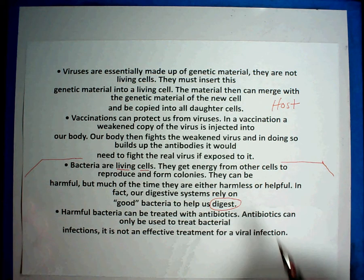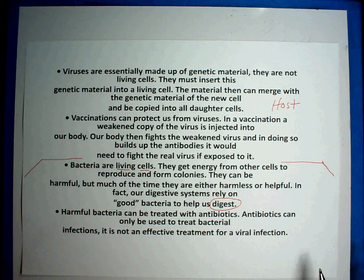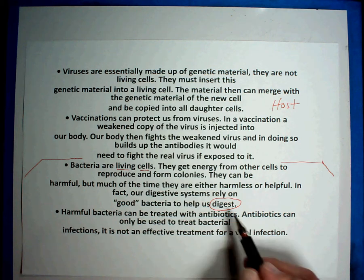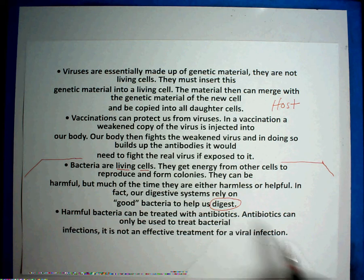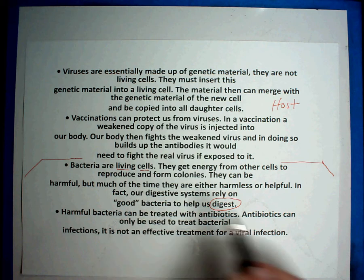In our intestines, we have bacteria that live there that help us digest our foods. They're very important as the last means of getting all the vitamins and nutrition out of our food. Animals have the same thing. Cattle have good bacteria that live in their digestive system as well. So bacteria can be good. They could also be bad.